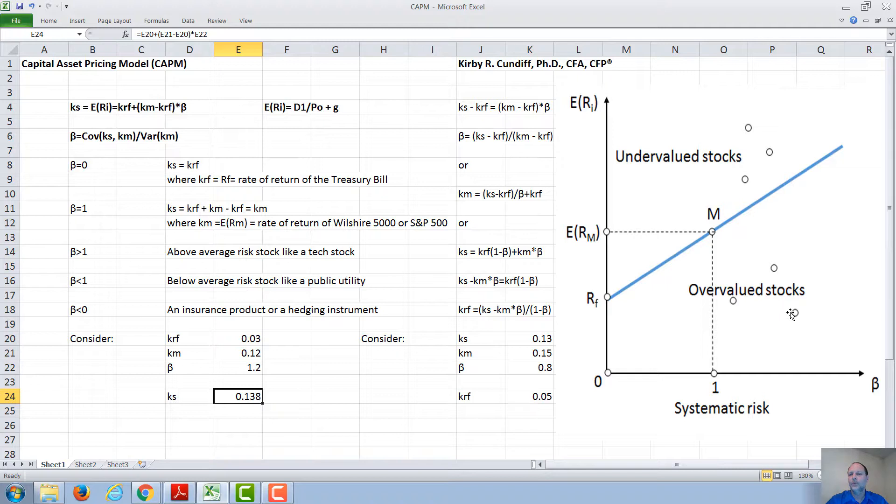Stocks down here, with a rate of return below the CAPM line, would be considered bad investments. You would want to either sell them or short sell them. And if you did that, then the P-naught would go down and the expected rate of return would go up.